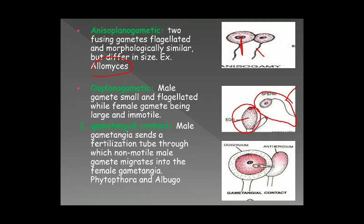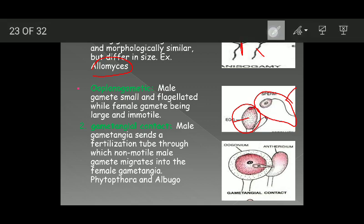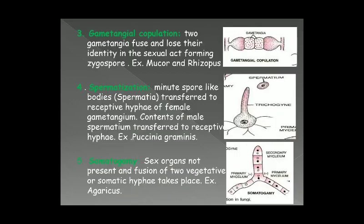The second mode of sexual reproduction in fungi is gametangial contact. In this type, the male gametangium (antheridium) sends a fertilization tube through which the non-motile male nucleus migrates into the female gametangium (oogonium). Example is Phytophthora and Albugo. Here you can see the antheridium sends a fertilization tube which helps in the movement of the non-motile male nucleus from the antheridium to the oogonium.